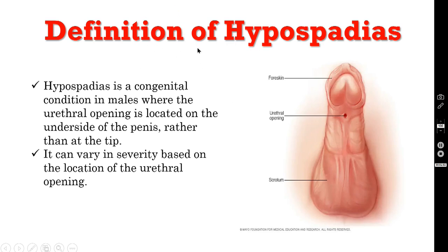So what is hypospadias? Hypospadias is a congenital condition in male babies where the urethral opening is located on the underside of the penis, or on the ventral side, rather than at the tip. Normally the urethral opening should be at the tip, but in hypospadias the opening is displaced proximally. This is what is called hypospadias.